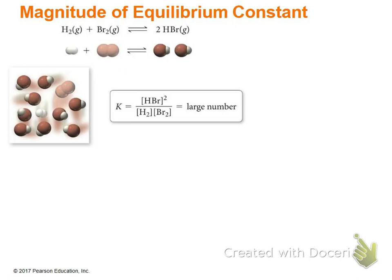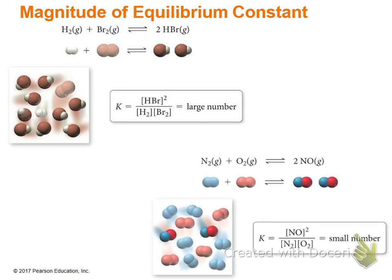This slide illustrates what it looks like with a large versus small K. If K is large, you have a lot of product — for example, about nine hydrogen bromide molecules compared to very few bromine gas and hydrogen gas molecules — much more product than reactant. If K is small, you have more reactants than products.